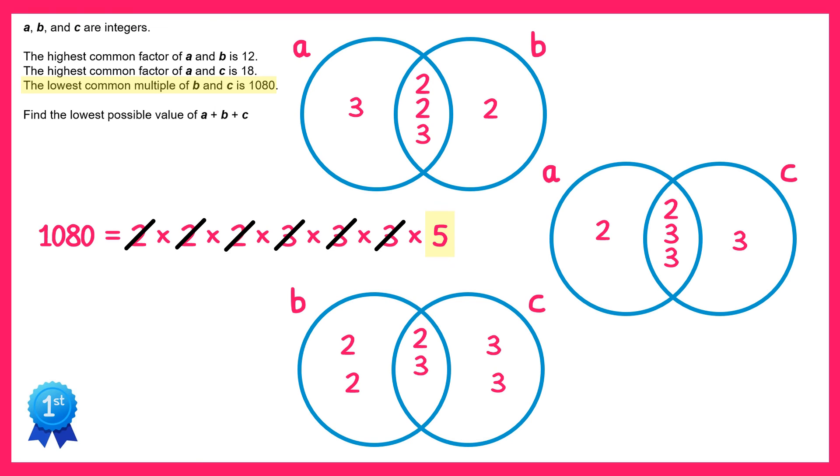Since B is a smaller number, because it's made up of 2 times 2 times 2 times 3 compared to 2 times 3 times 3 times 3, we're going to place it inside the B circle, so here.